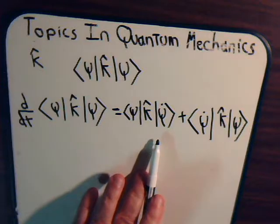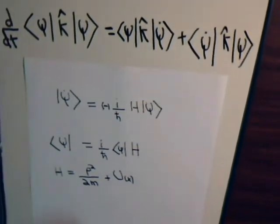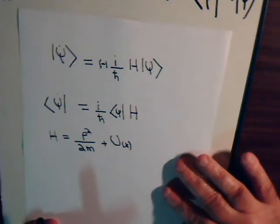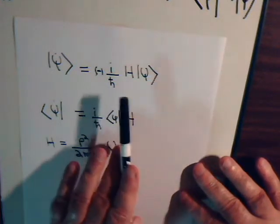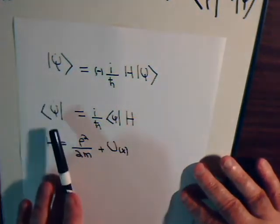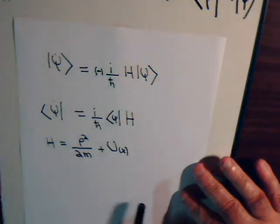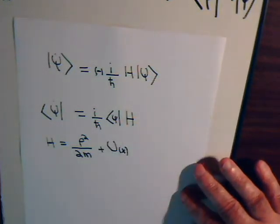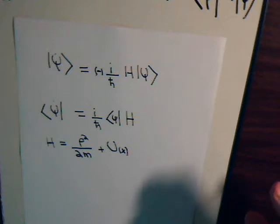Now, what is this equal to? Well, this goes back to Schrödinger's equation. Schrödinger's equation is: psi-dot is equal to minus i over h-bar, and we have the Hamiltonian operating on the state vector psi. So here, this is the complex conjugate. Over here, this is plus i over h-bar, and then we have the bra vector psi with H to the right of it. How operators operate on a bra vector, we have covered in one of the previous videos.